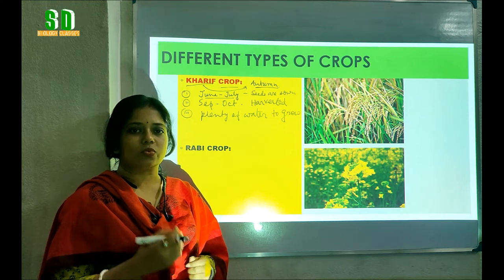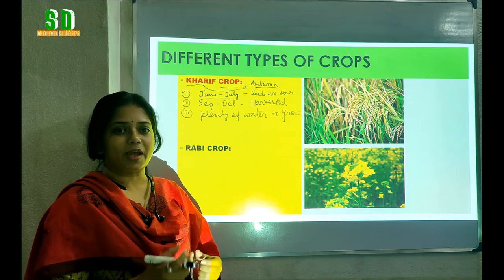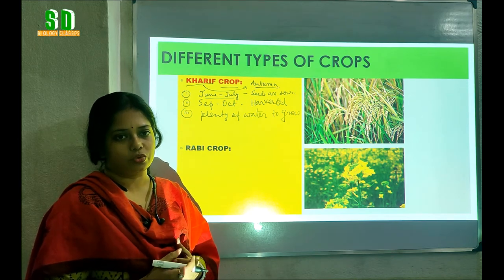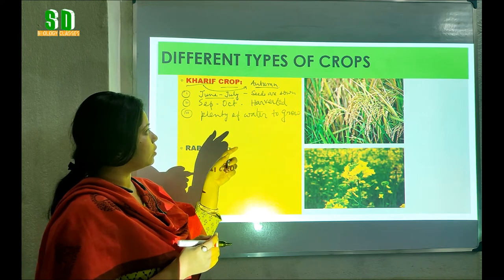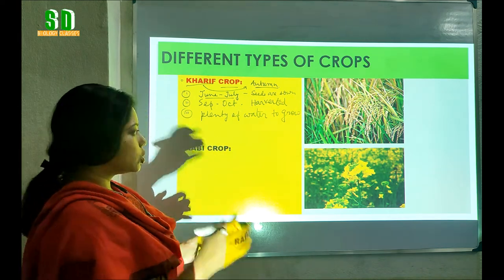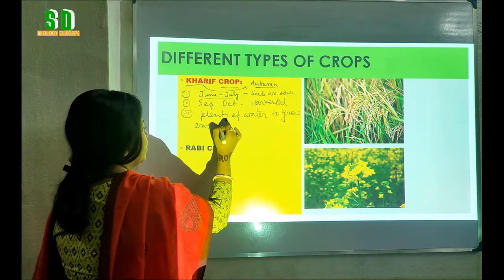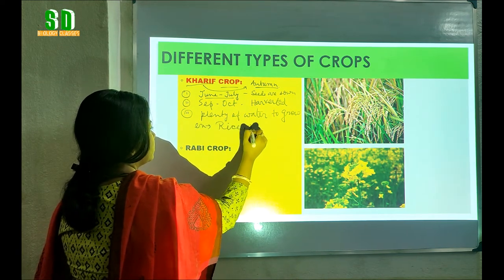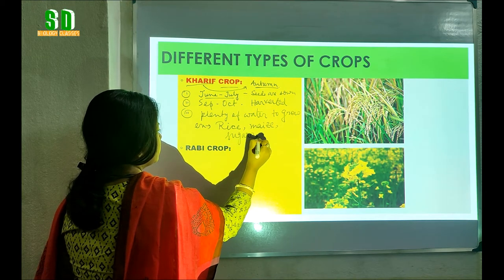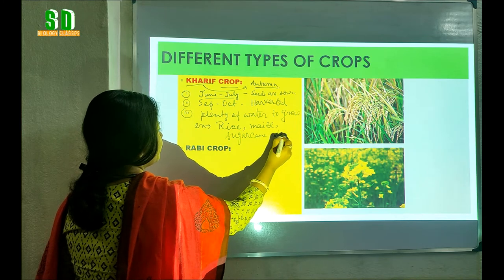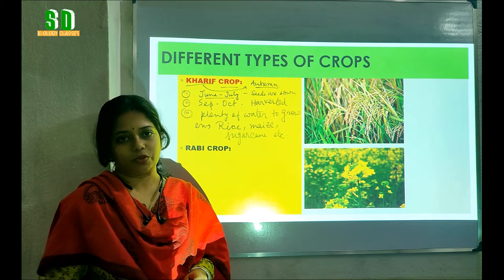Now can you guess which can be the examples of the Kharif crop? The plants which need more water to grow and which are grown during the months of June-July and harvested in September-October. The examples of these types of crops are mainly rice, maize, sugarcane, etc.